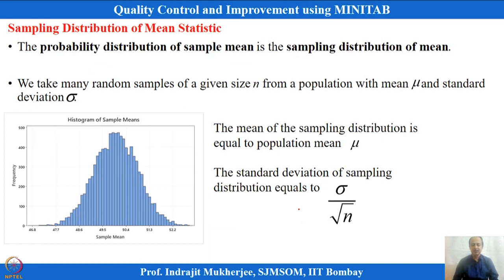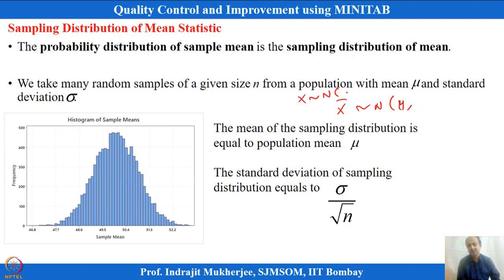When we do the sampling distribution of means, statisticians have given us a formulation. If x follows a normal distribution with mean μ and variance σ², then x-bar will follow a normal distribution with mean μ and standard deviation σ/√n. So x following normal with mean μ and σ is proved.